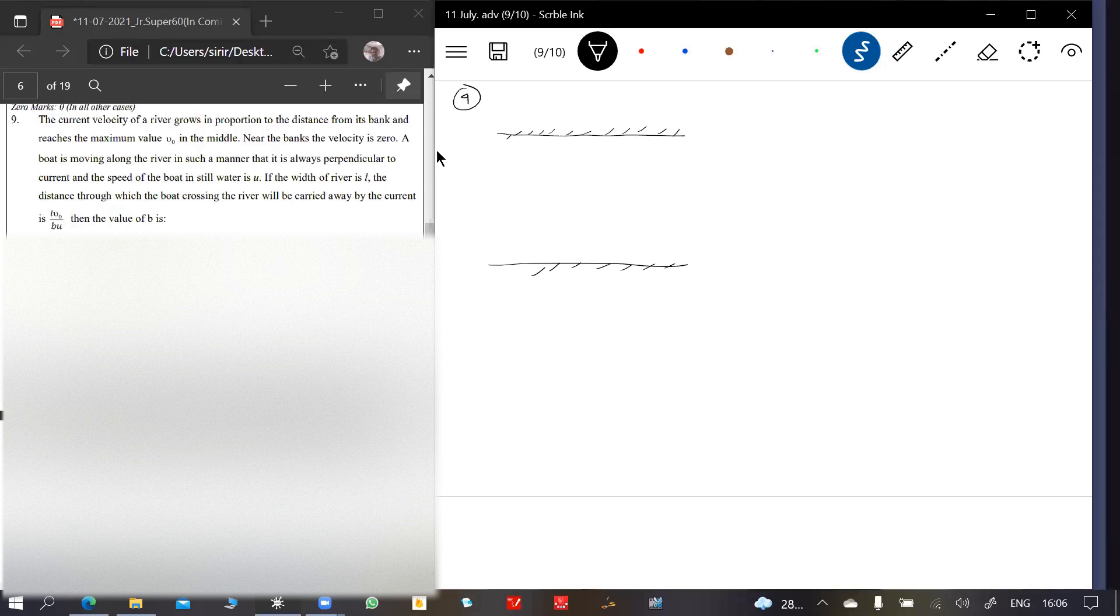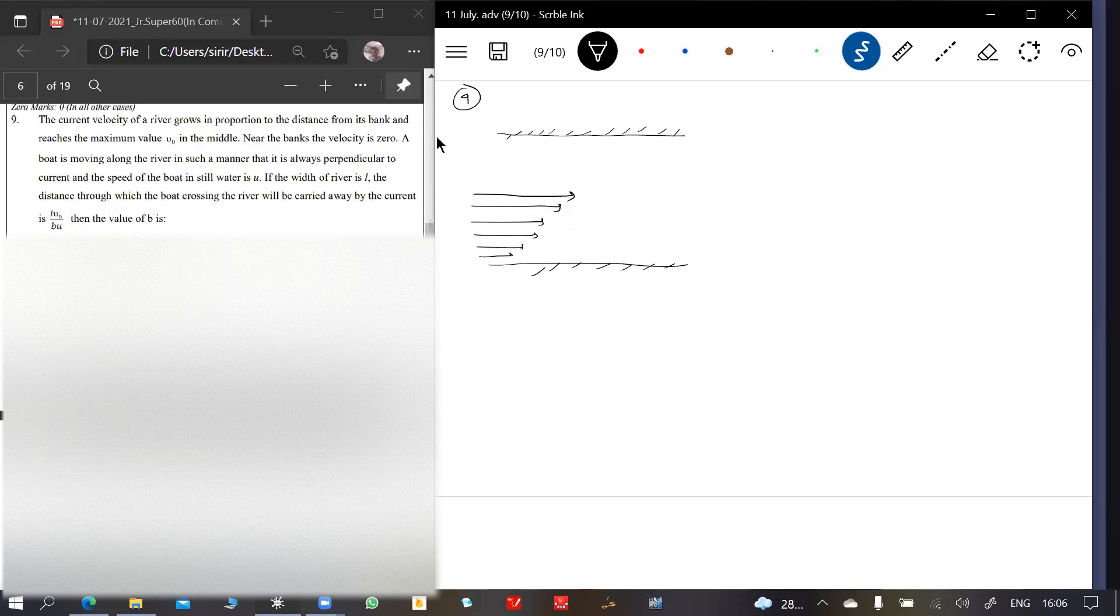I'll explain it. The growth in proper distance from the bank, the river current velocity will be like this. What are these arrows? The velocity of river current will be different at different points. Here it is V0, here it is 0 at the bank, and the length of this is...